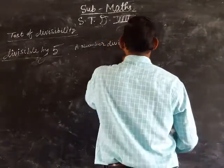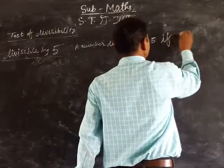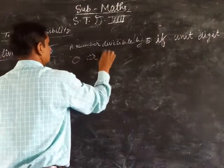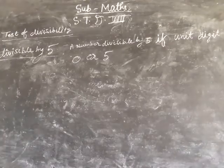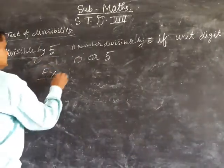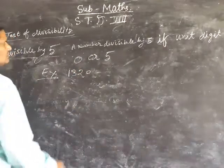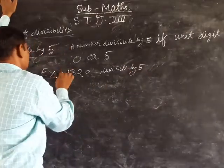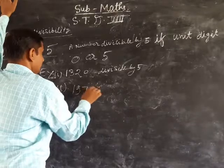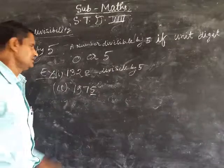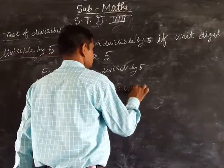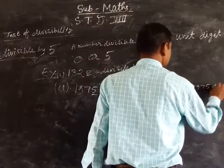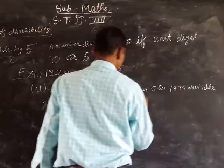A number is divisible by 5 if its unit digit is 0 or 5. For example, 1, 3, 2, 0 — the unit digit is 0, so it is divisible by 5. Second example: 1, 9, 7, 5 — the unit digit is 5, so 1975 is divisible by 5.